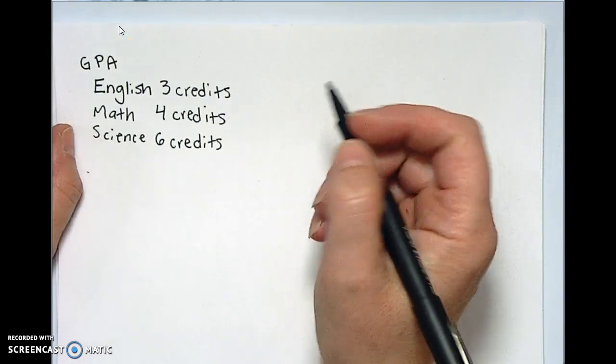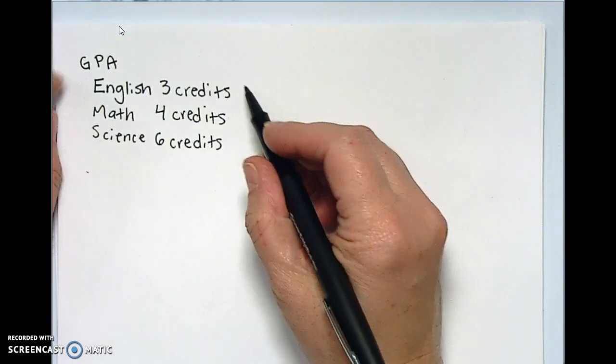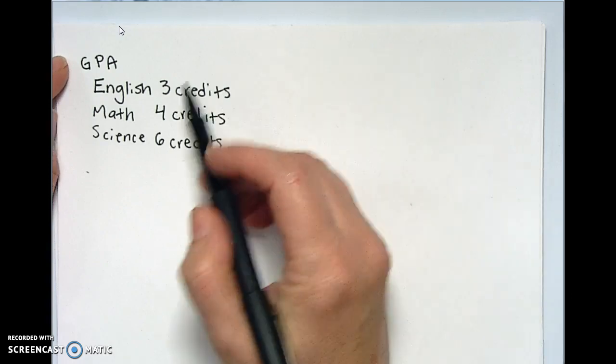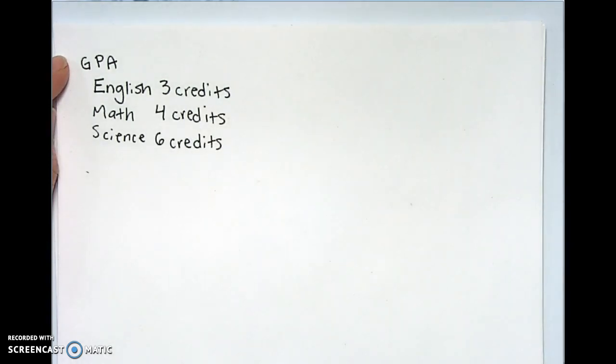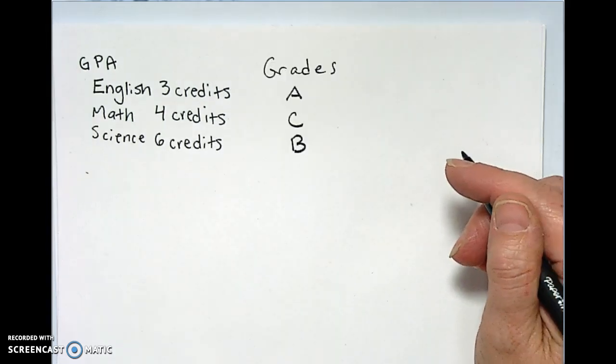Alright, we're going to calculate a GPA today really quickly. A little short semester where you only took three classes, where English was three credits, math was four credits, and science was six credits, and here's your grades you got that semester.